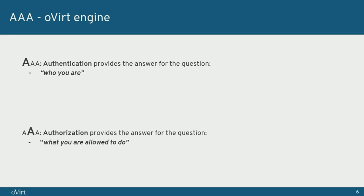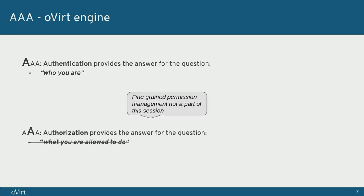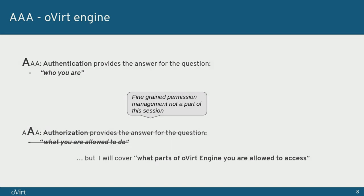The second A stands for authorization, which provides the answer to the question: what you are allowed to do. In this presentation I'm not going to talk about fine-grained permission models, the management of permissions, groups, or assigning permissions for users to start, stop, or modify VMs managed by oVirt engine. I'm only going to cover the part responsible for allowing access to various parts of oVirt engine. oVirt engine as a whole is composed of three parts: the administrator panel, the VM portal, and the RESTful API.